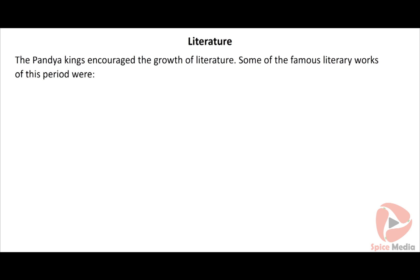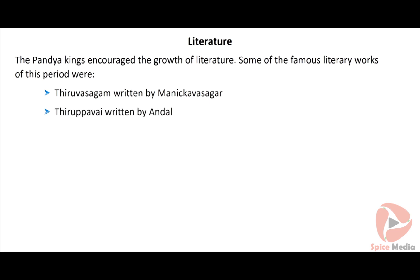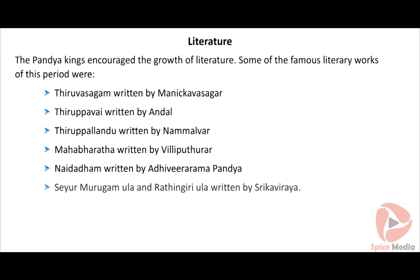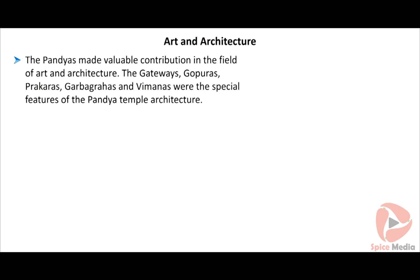The main occupation of Pandya society was agriculture and trade. The agriculturalists were termed as Bhoomi Putiras. There were slaves in the Pandya dynasty who performed different tasks. Pearl diving was one of the important occupations of the Pandyas. The pearls of the Pandya kingdom were world famous. Korkai and Tondi were the famous ports of the Pandyas.